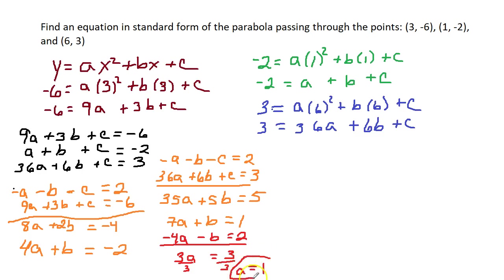Okay, now we know our first variable. I am going to plug this 1 in place of a into the 4a plus b equals negative 2. So, 4 times 1 plus b equals negative 2. 4 plus b equals negative 2. Subtract 4, and we get b equals negative 6.